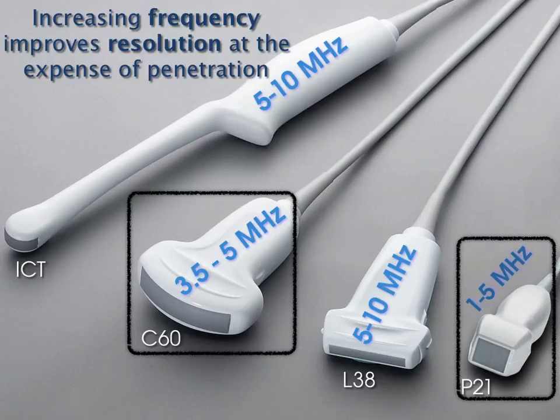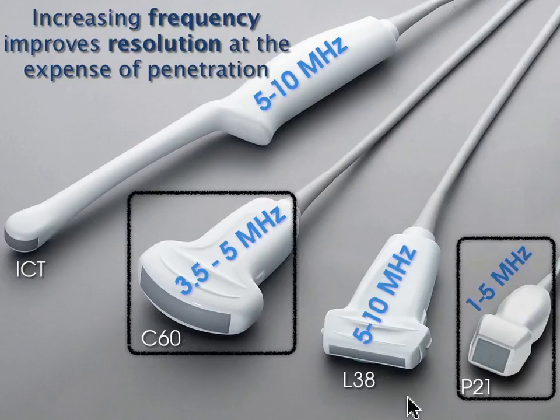With the intracavitary transducer you can see the bladder from within the vaginal vault, but the tight curvature creates a lot of artifacts. We always recommend women have a completely empty bladder for endovaginal ultrasound. The L38 linear probe would be difficult to use for the bladder unless the patient is very thin or has a very full bladder.